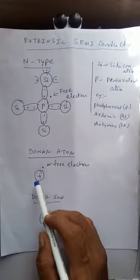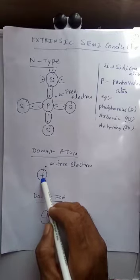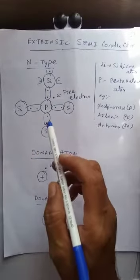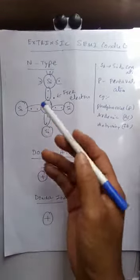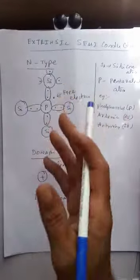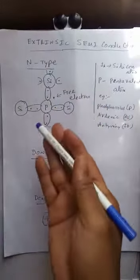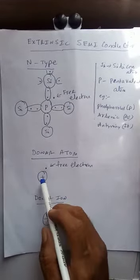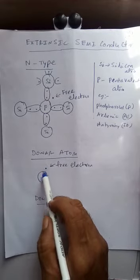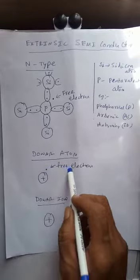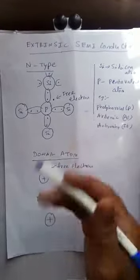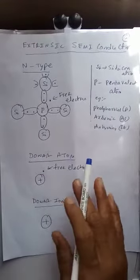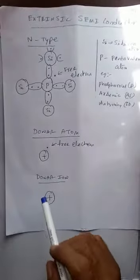Here is the representation of a donor atom. The plus symbol is in the center with a circle and a dot around it representing the free electron. This is the pictorial representation of a donor atom — the nucleus is positive and it has one free electron ready to be given to another atom.